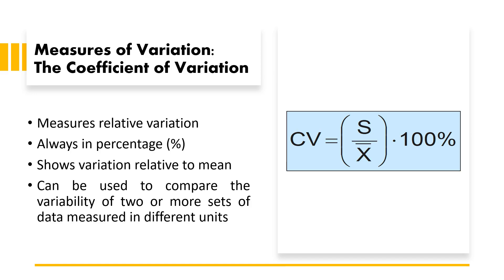The coefficient of variation measures relative variation and is always expressed as a percentage. It shows variation relative to the mean and can be used to compare the variability of two or more datasets measured in different units. The formula is CV = (s / x̄) × 100, where s is the standard deviation and x̄ is the mean.